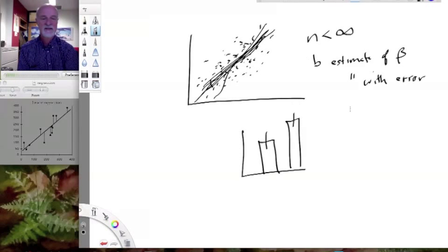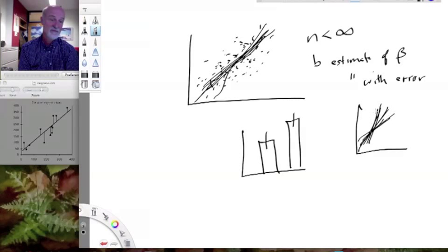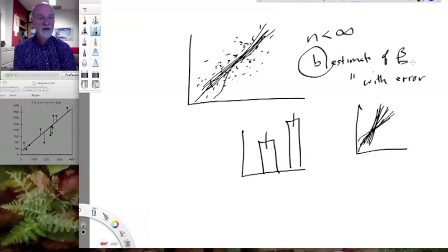The slope could be this or it could be this. The slope could be this or it could be this or it could be this. We've got a range, but we don't know exactly what it is. That's what we're trying to do. We're trying to put error estimates on b by having lots of replication so we can hopefully get a better and better estimate of the true parametric slope, the true parametric relationship between y and x.